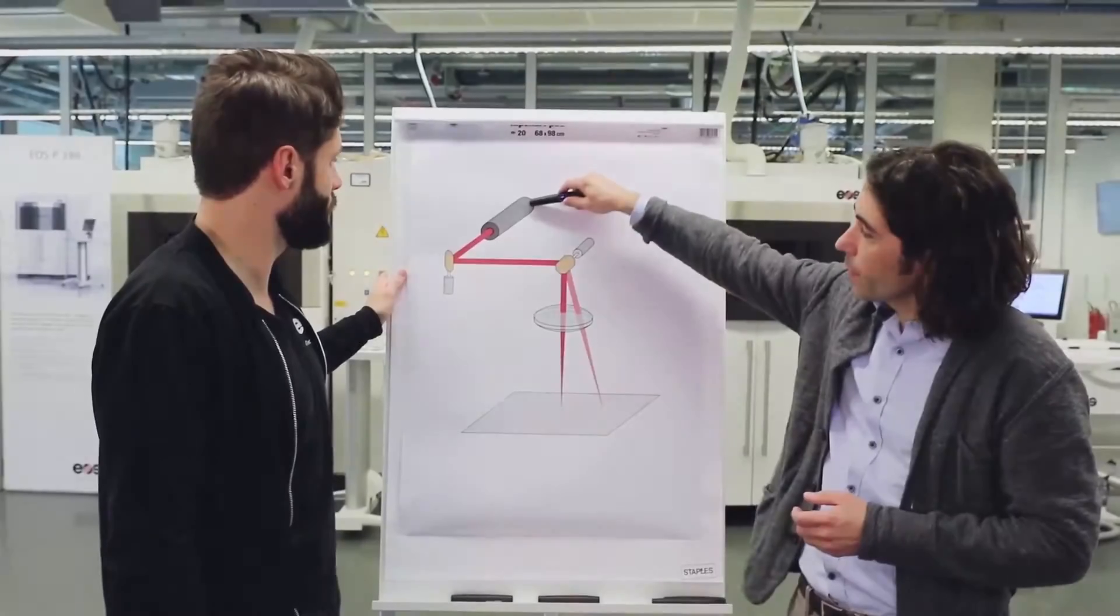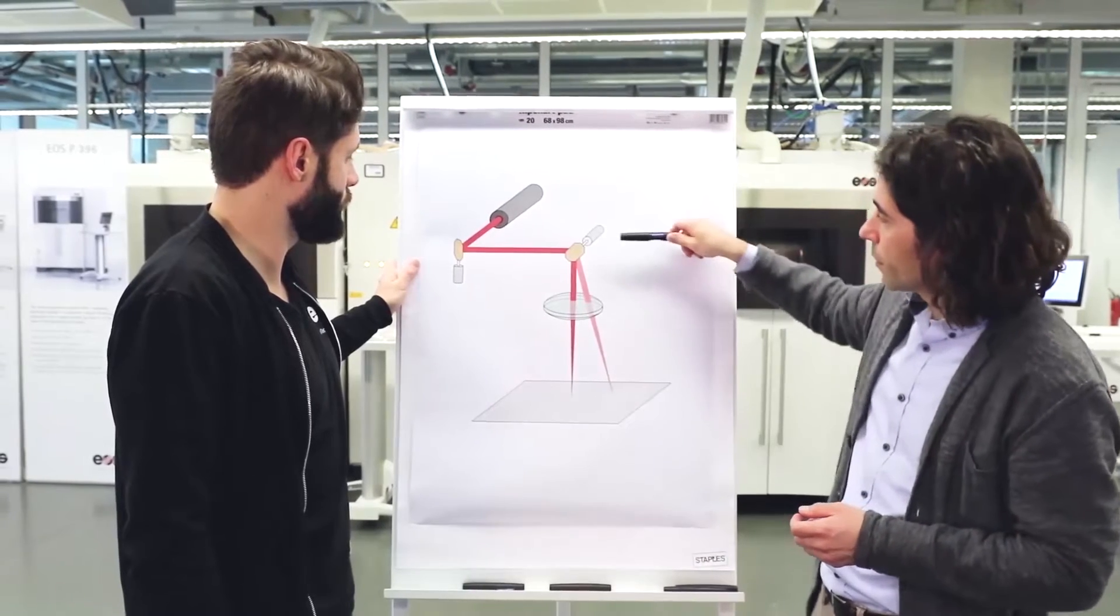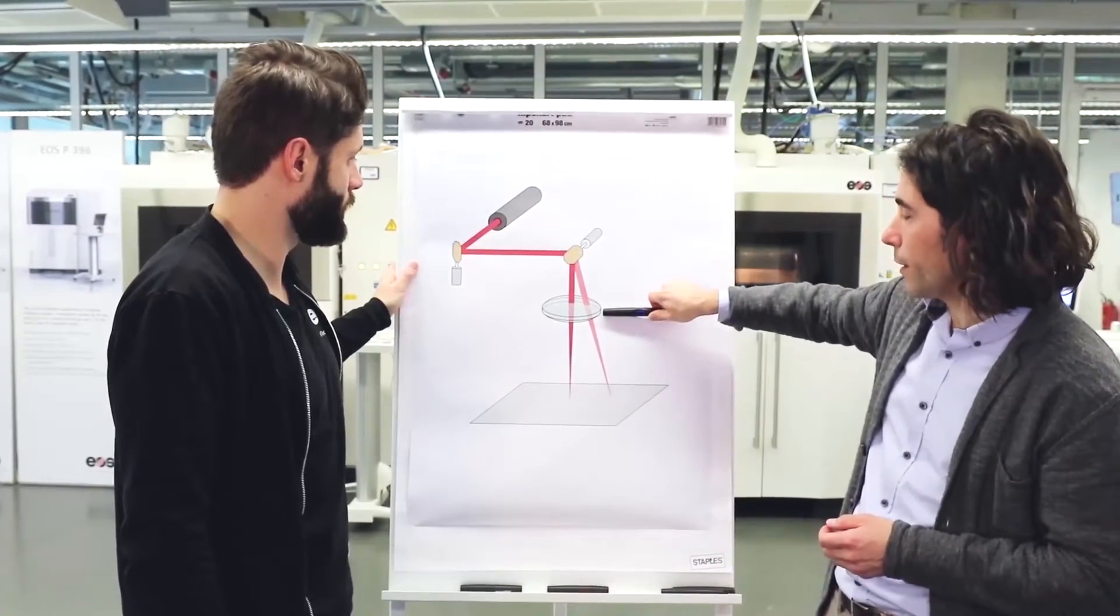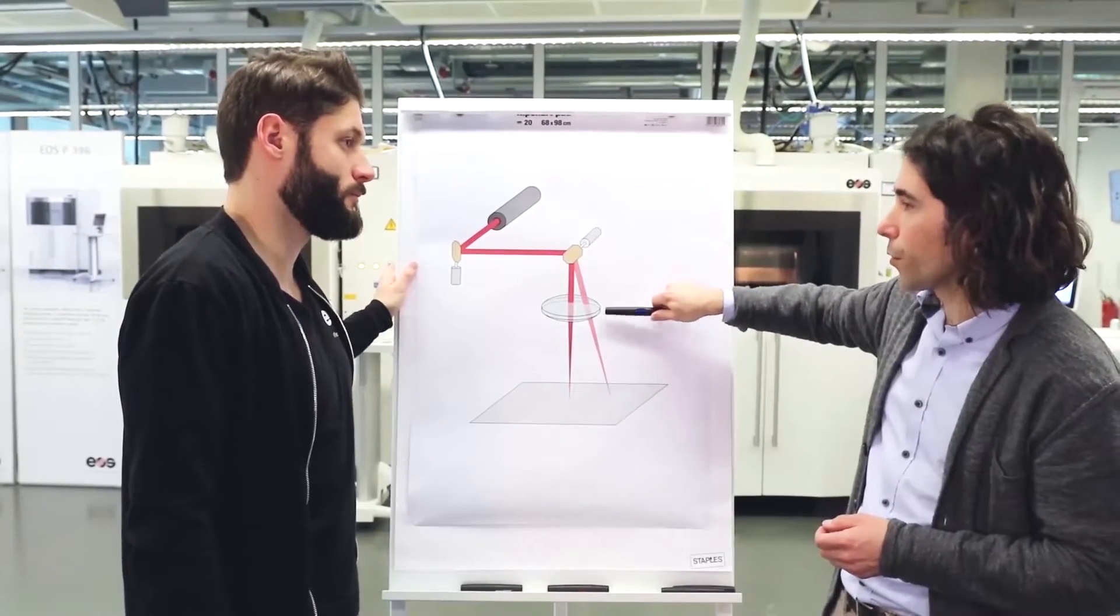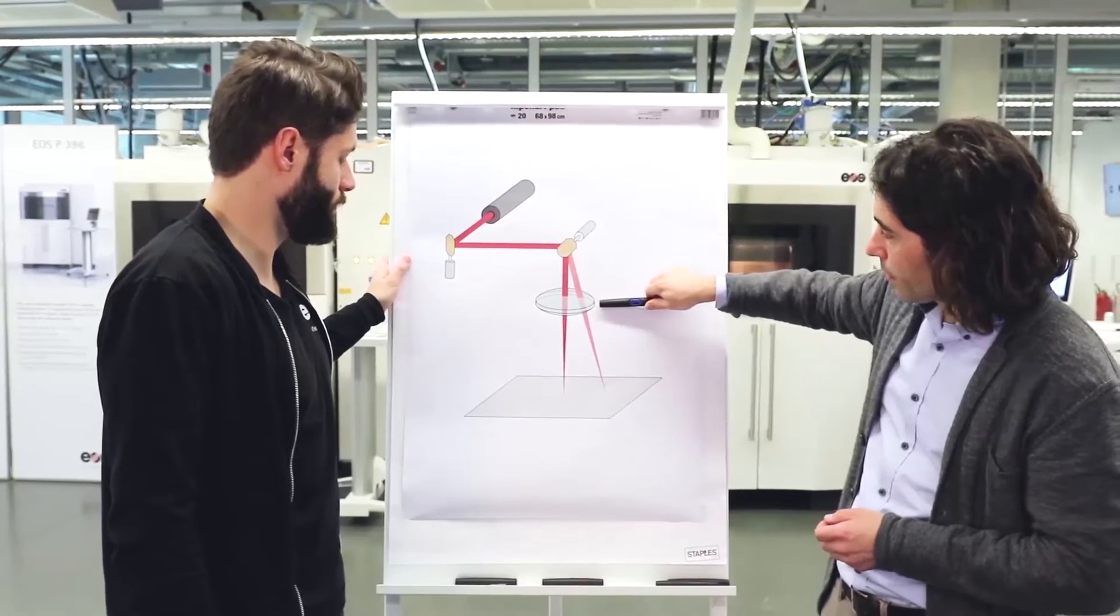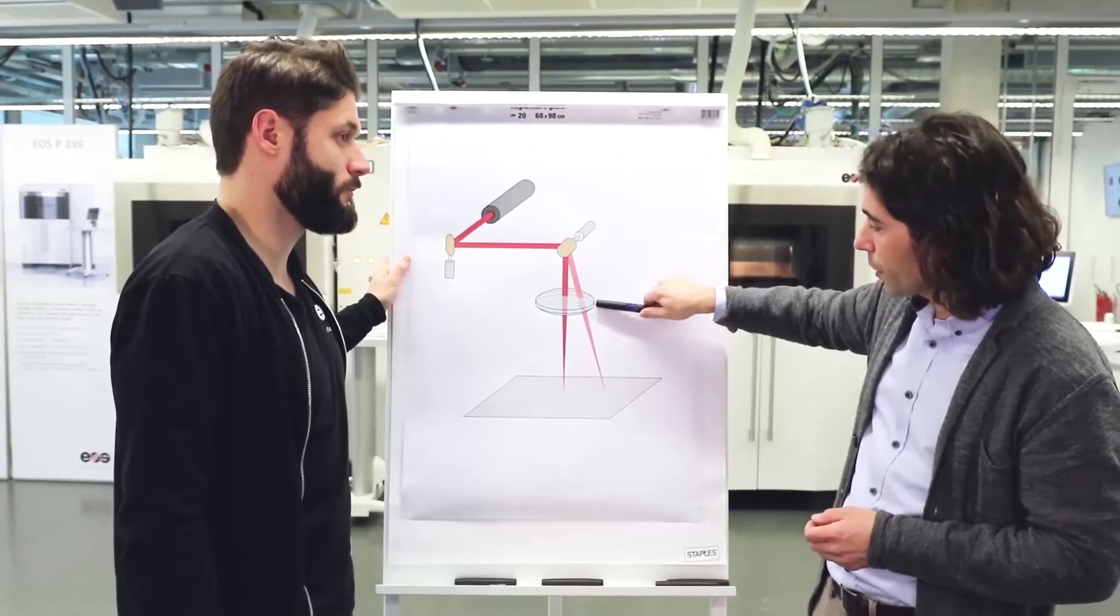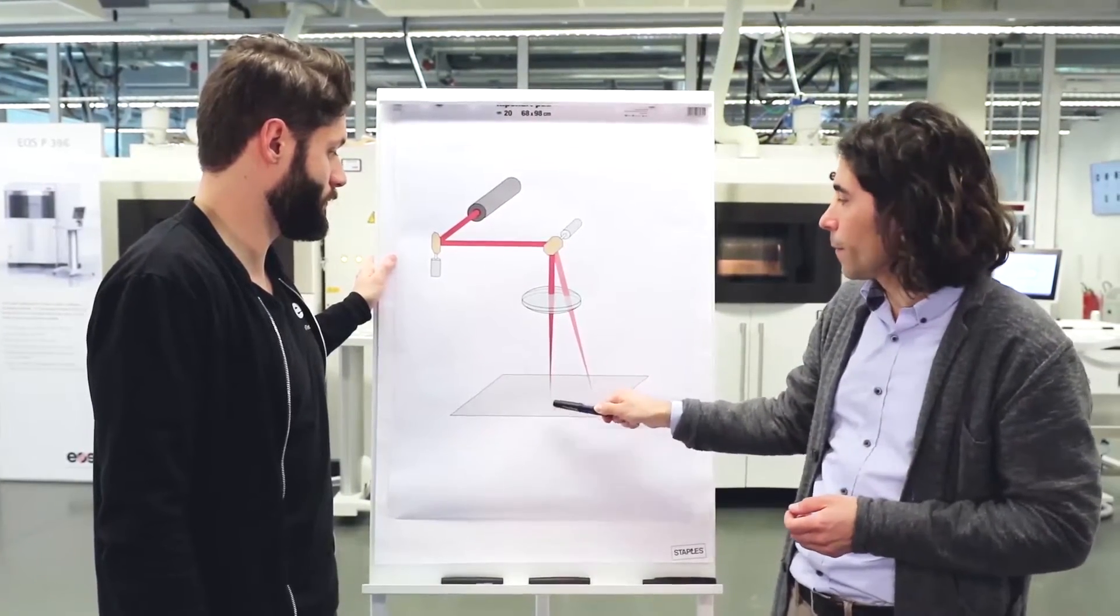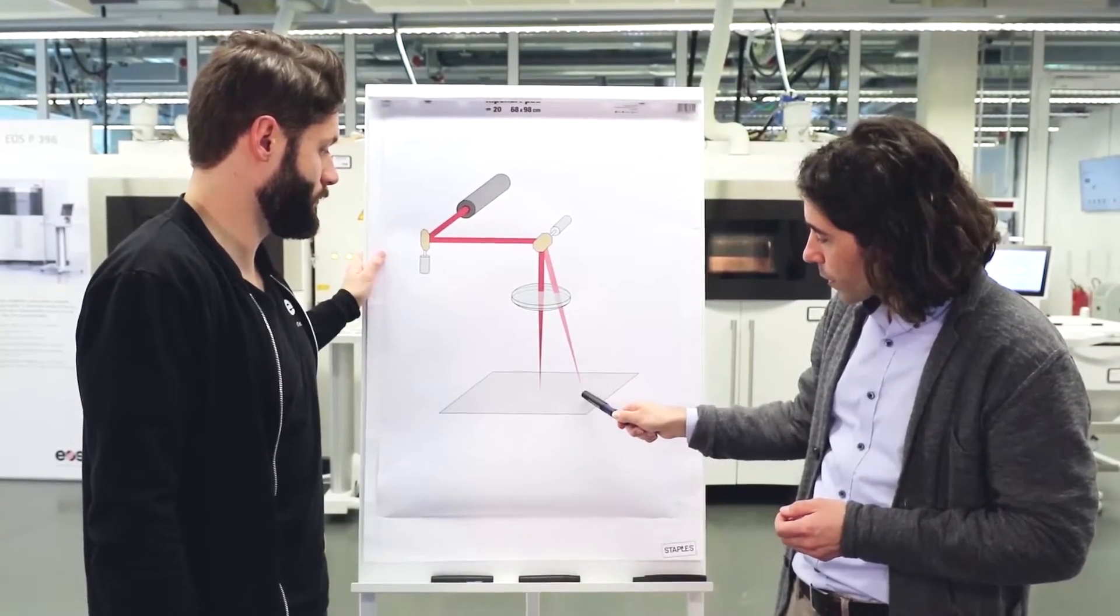You have a laser here, you have the scanning mirrors in one direction, a second scanning mirror in the other direction, and this is the scan lens, which is a so-called F-theta lens. And the scan lens fulfills two functions. First, it focuses the laser light to a small spot size.